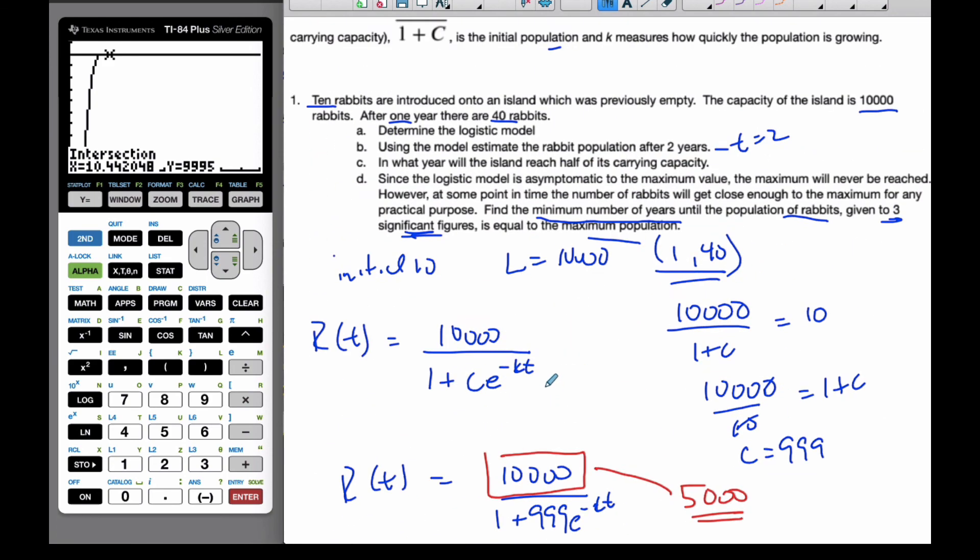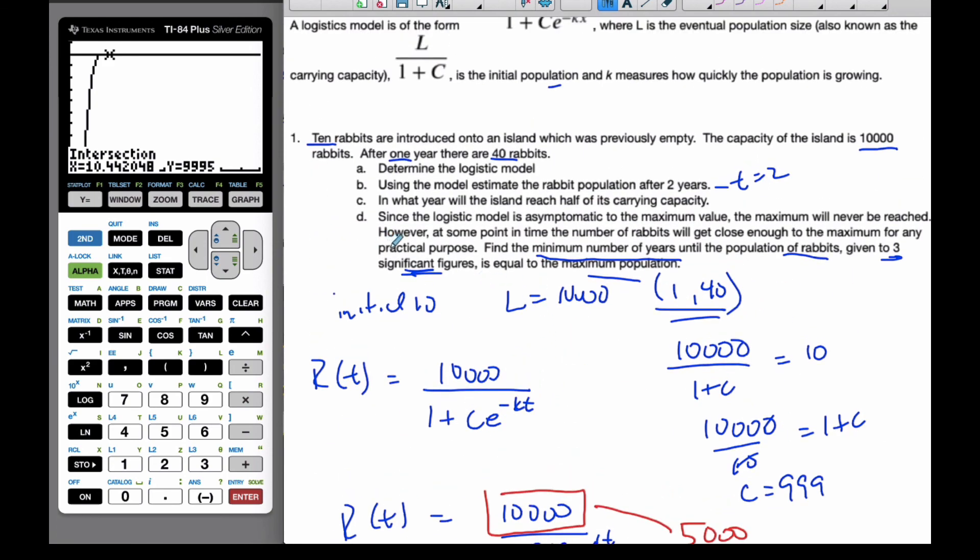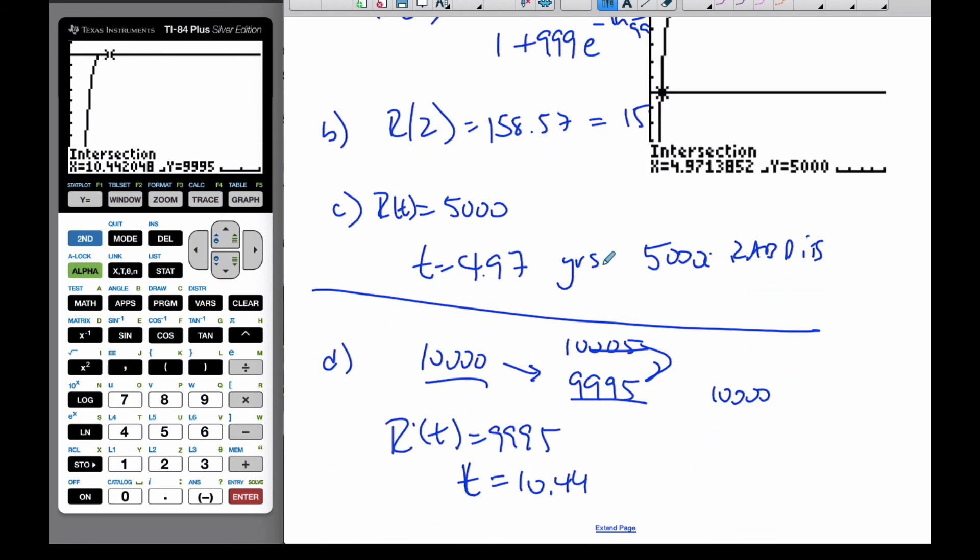So, let's answer it correctly. So, find the minimum number of years until the population of rabbits given is equal to the maximum population. That means, actually, in the 11th year, in the 11th year, we will hit our maximum.